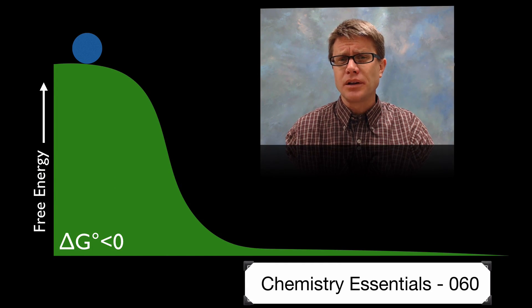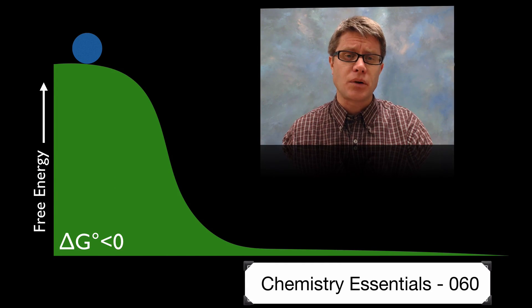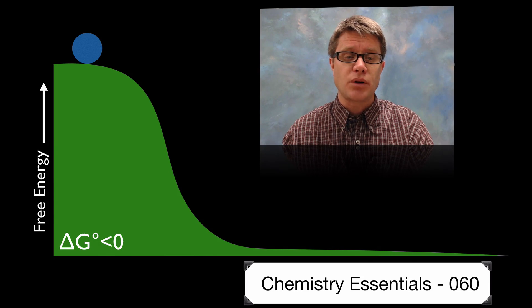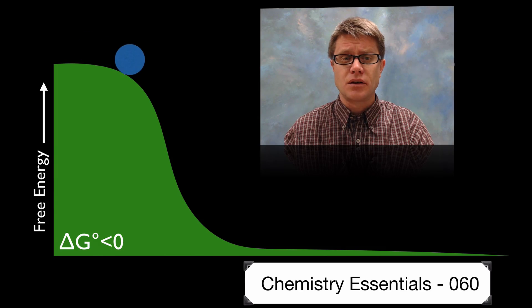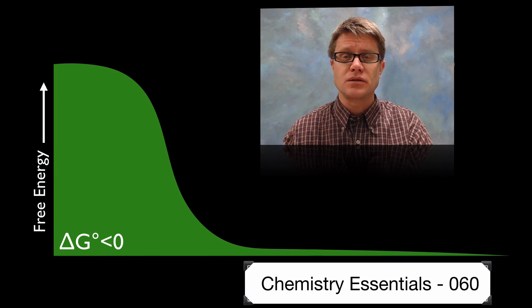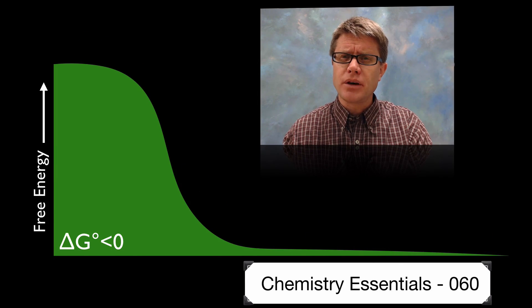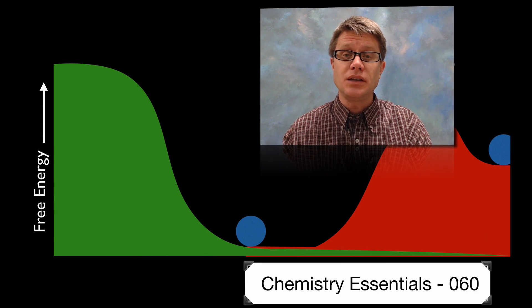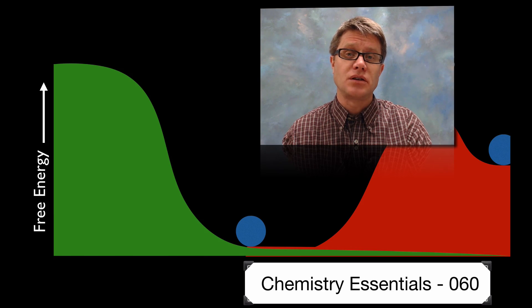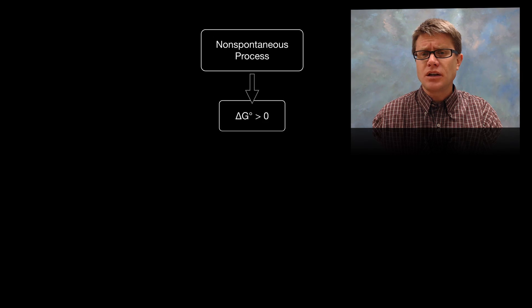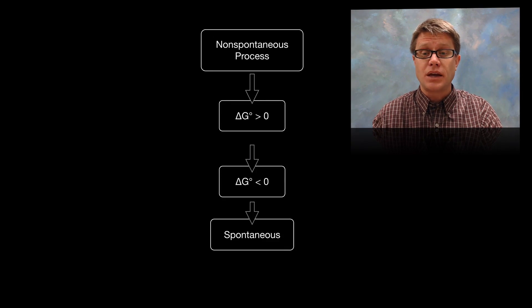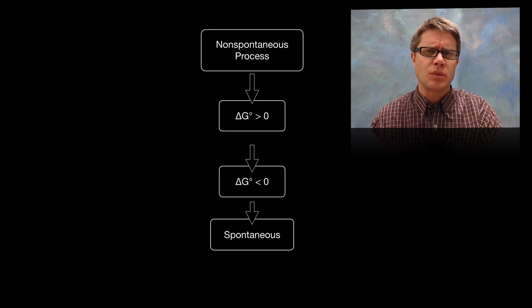Another way we can do it is we can couple it to a spontaneous process. If we look at an exergonic or energy releasing process where delta G is less than zero, that's going to be a downhill reaction. You could imagine if we were to couple those two together, we could take some of that energy released in that spontaneous reaction and use it in the non-spontaneous reaction.